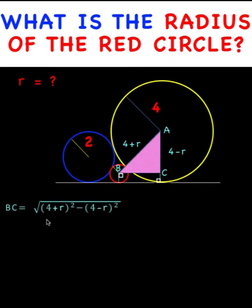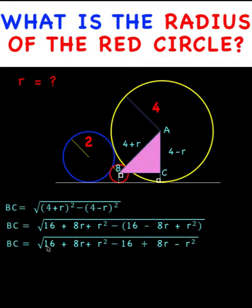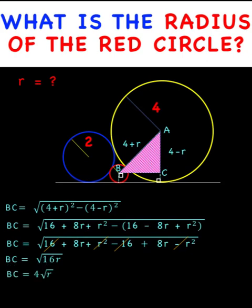When two sides of a right triangle are known, we can compute the third side using the Pythagorean formula. Side BC equals the square root of the difference between the squares of the hypotenuse and one of the legs. Expanding the binomials and simplifying: 16 minus 16 is 0, and R squared minus R squared is 0, leaving us with the square root of 8R plus 8R, or the square root of 16R, simplified to BC equals 4 times the square root of R.